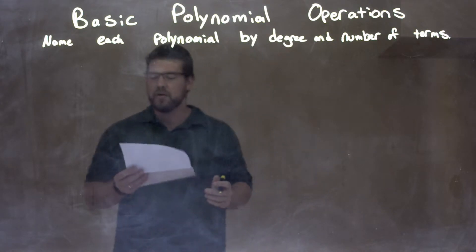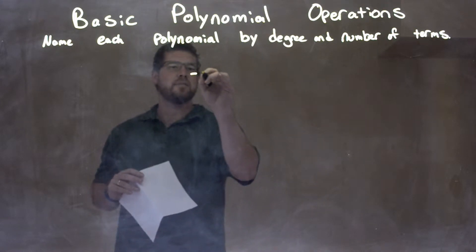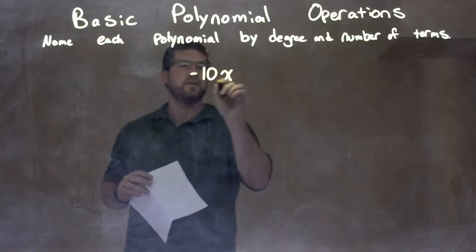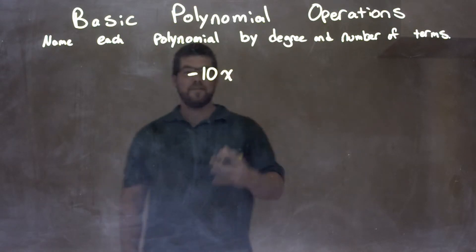So if I was given this polynomial, negative 10x, we have negative 10x here. Well, how do we classify this?